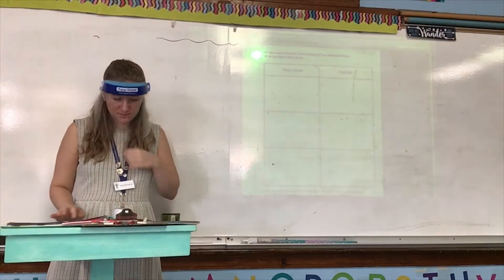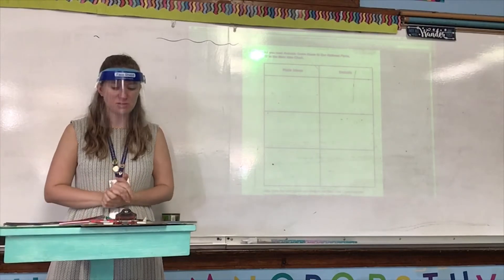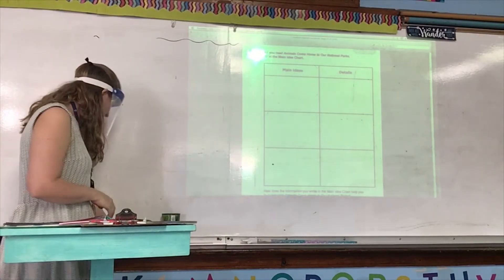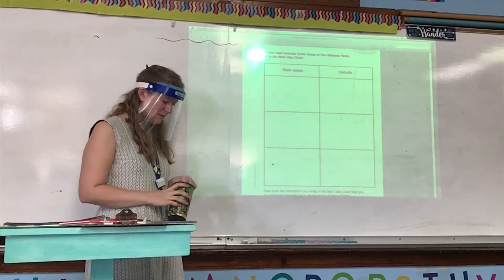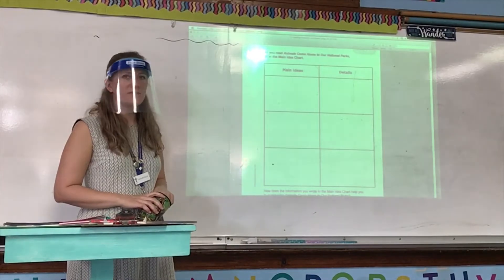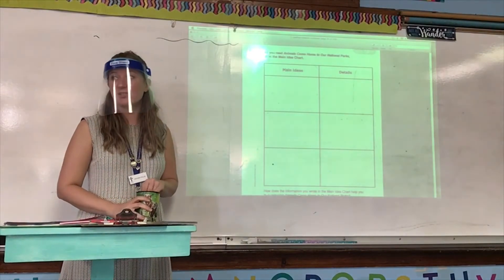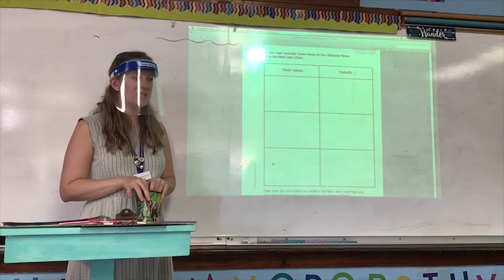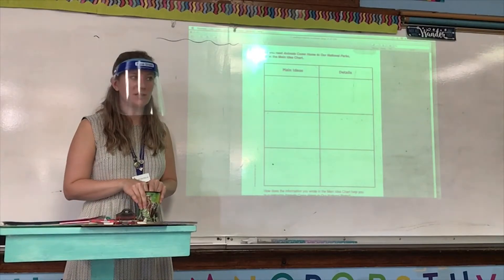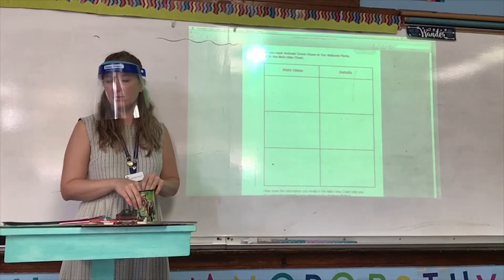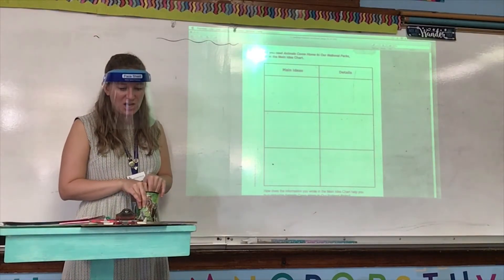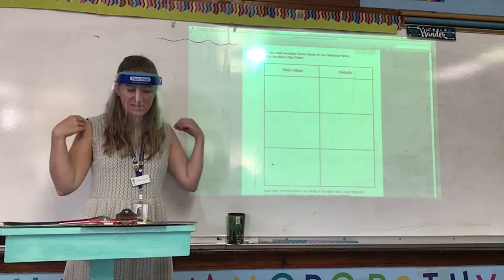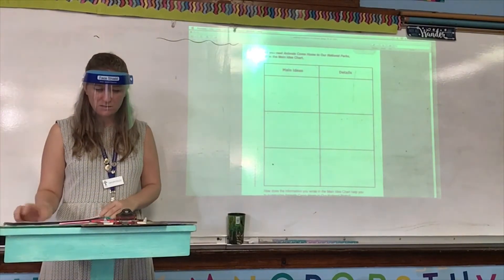Go ahead and open your textbooks to page 74. Make sure you have your main idea chart out, ready to follow along. Face shields on quickly. Kingston, tell us the genre of this passage. Loud and slow.